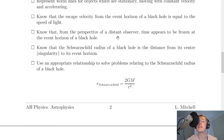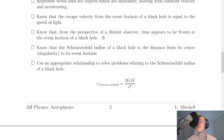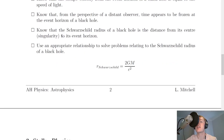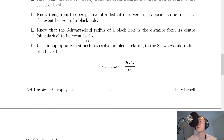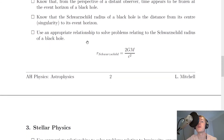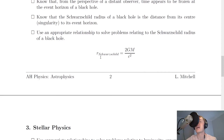From the perspective of a distant observer, time appears to be frozen at the event horizon of a black hole. Time slows down near the event horizon and becomes frozen at it. The Schwarzschild radius is the distance from the centre of a black hole, i.e. the singularity, to its event horizon. You need to use the equation: r Schwarzschild equals 2GM over c squared — you can write r subscript s for short — to solve problems relating to the Schwarzschild radius.